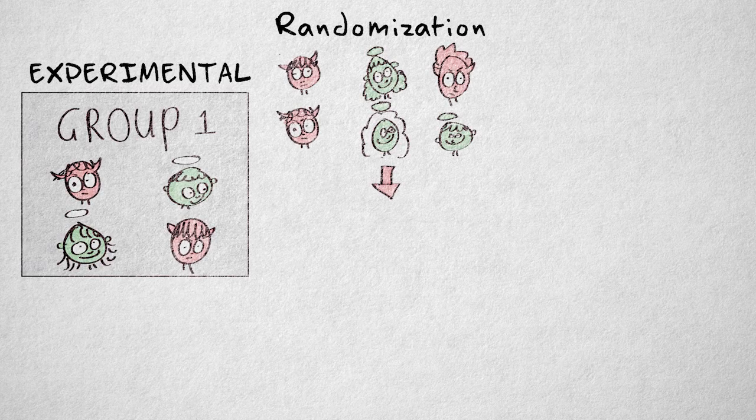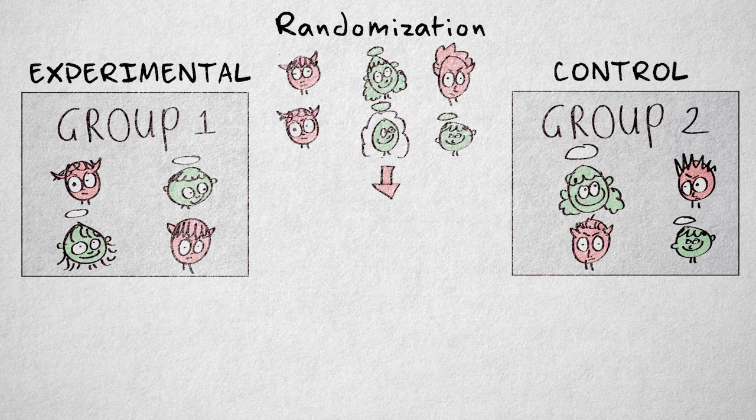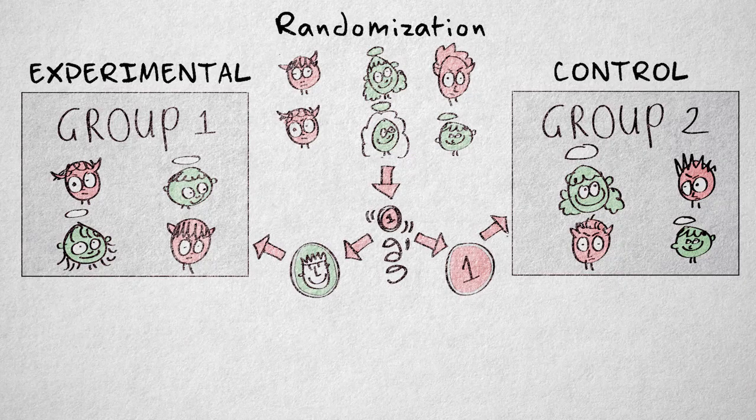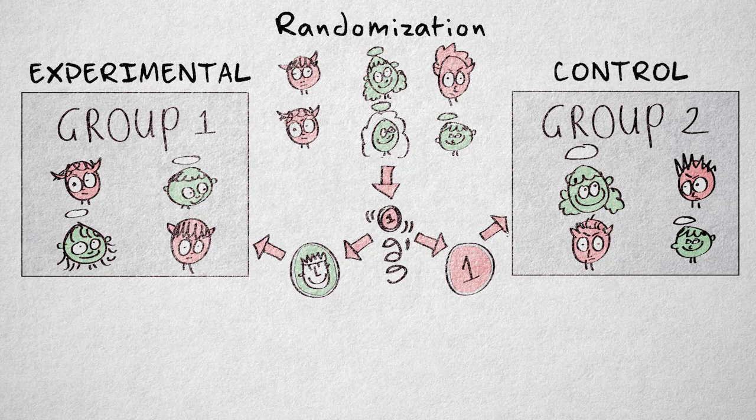This is where randomization comes in. I can randomly assign children to the experimental condition with heavy video play, or the control condition with no access to violent imagery. And I can do this by flipping a coin. Heads for the experimental condition, tails for the control condition.